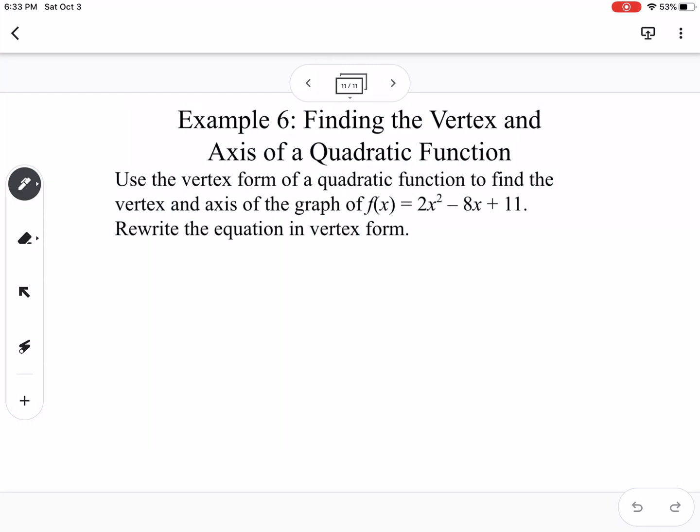And then our last part is finding the vertex and axis of a quadratic function. So it says to rewrite the equation in vertex form. So we can use a different method. So we could use completing the square like we did in the last example, or we can use that idea of h = -b/(2a). So let's do that for this one. So our b value, so a is 2, b is -8, and c is 11. So I'm going to take -8 divided by 2 times 2. So that would be positive 8 divided by 4, which is 2.